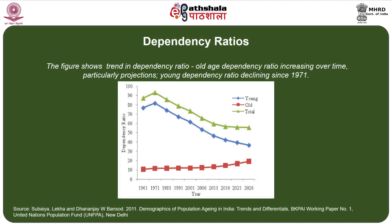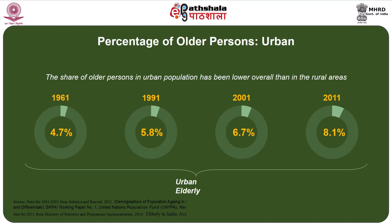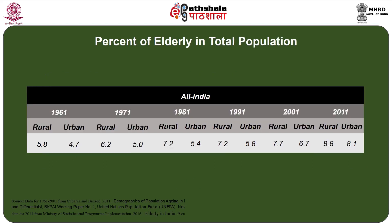The dependency ratio and its changes over time show that the childhood dependency ratio is declining, while the old age dependency ratio is increasing. The total dependency ratio is an important indicator for understanding how elderly populations need to be supported in society. Both rural and urban areas are experiencing a steady increase in elderly population, reflecting an overall growth in the aging segment across the country.